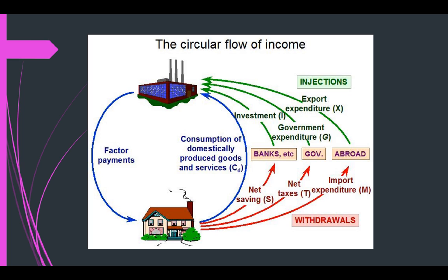Households also pay the government in the form of taxes. The government collects taxes and eventually spends that money — they build roads, fund the military, subsidize businesses. This becomes government expenditure. And households don't just buy things from businesses in the United States — they also buy things from foreign countries. That money we send to foreign countries becomes spending on imports, goods coming into the United States. When foreign countries buy things from our businesses, that becomes exports, and this will become net exports.